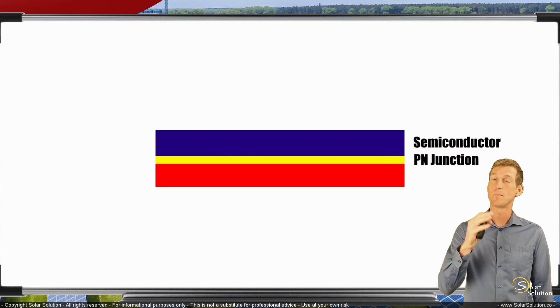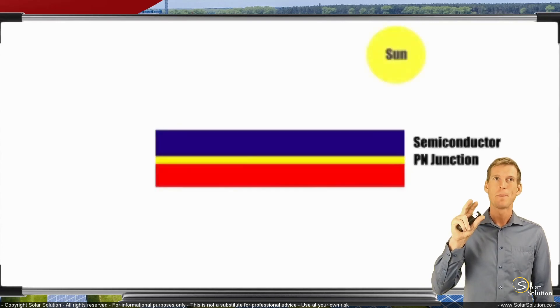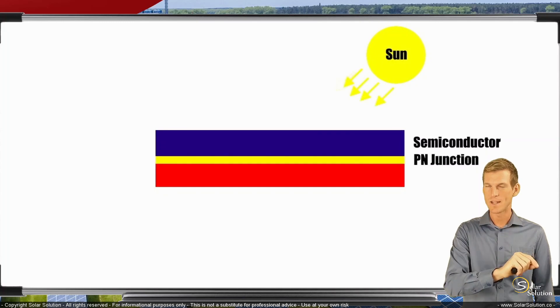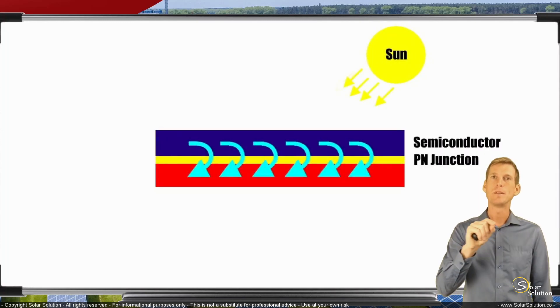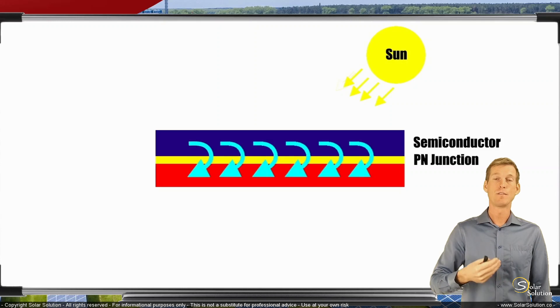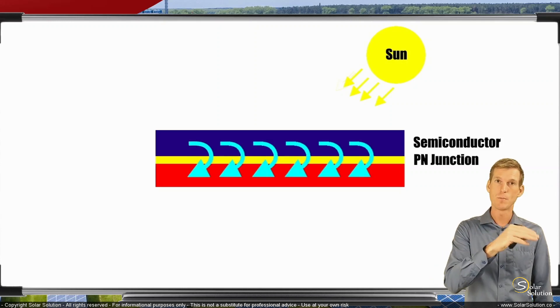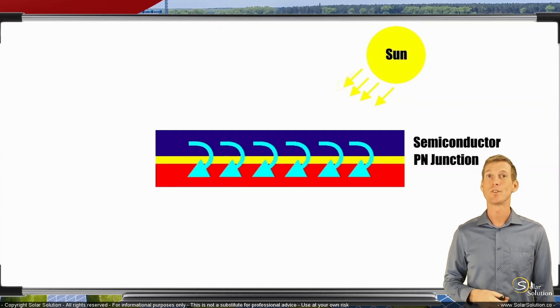If we take this semiconductor with a P-N junction and hold it in front of the sun, electrons want to jump from one side to the other. They want to jump over the P-N junction. Electrons, which are the building blocks and driving force behind electricity, jumping from one side to the other is the start of an electrical circuit.